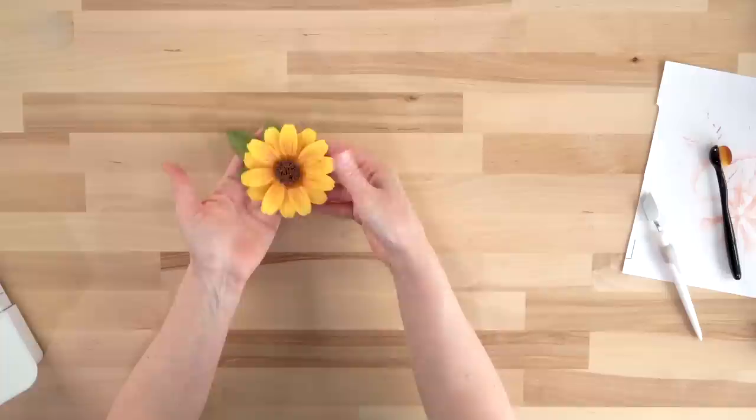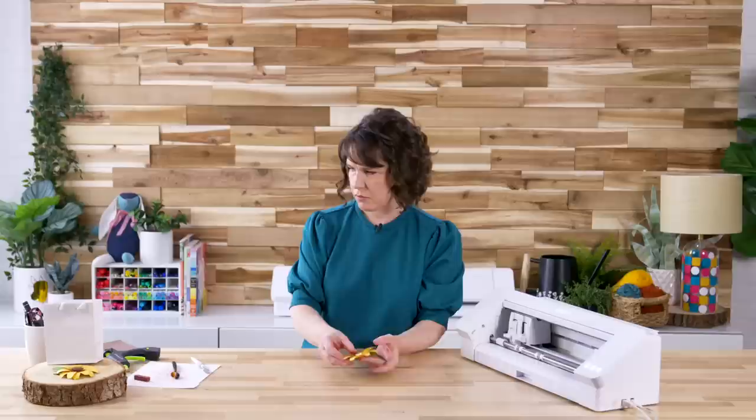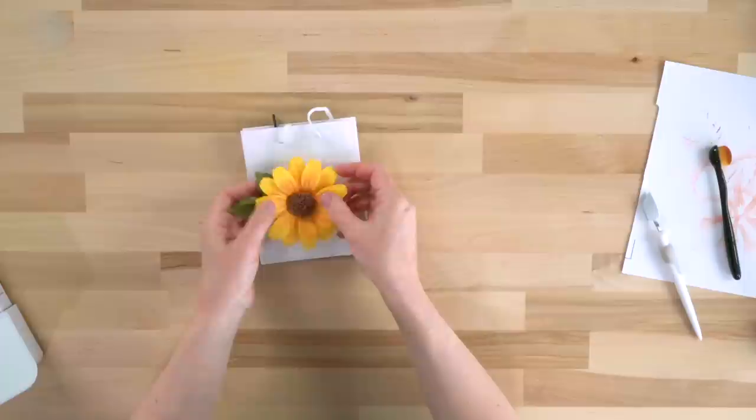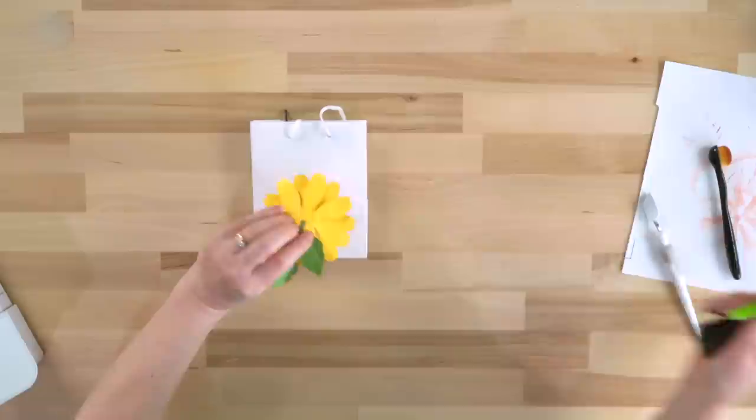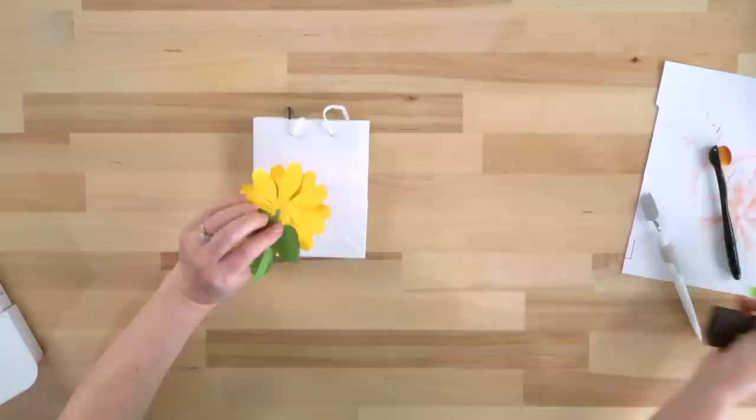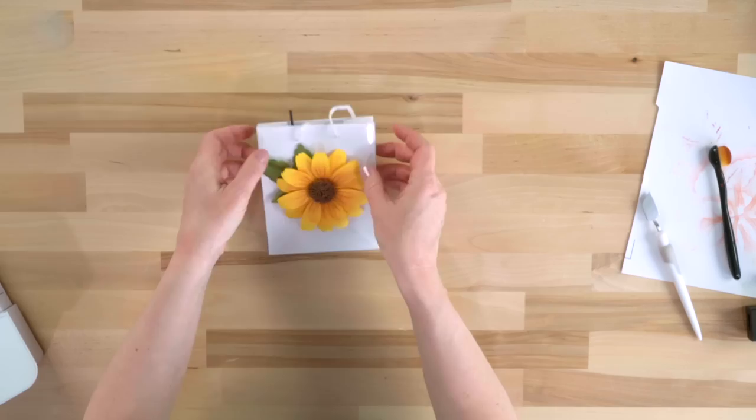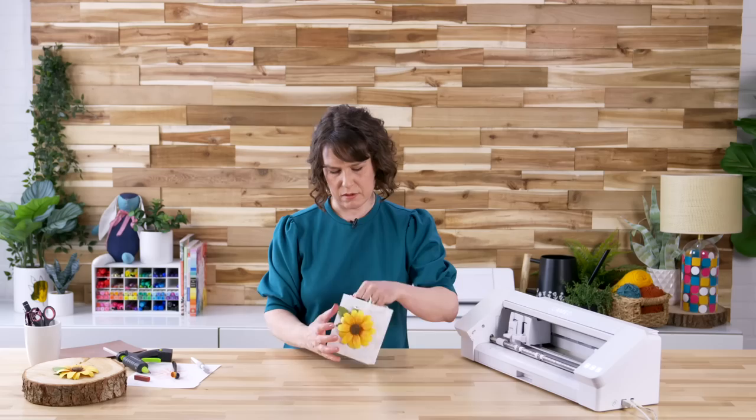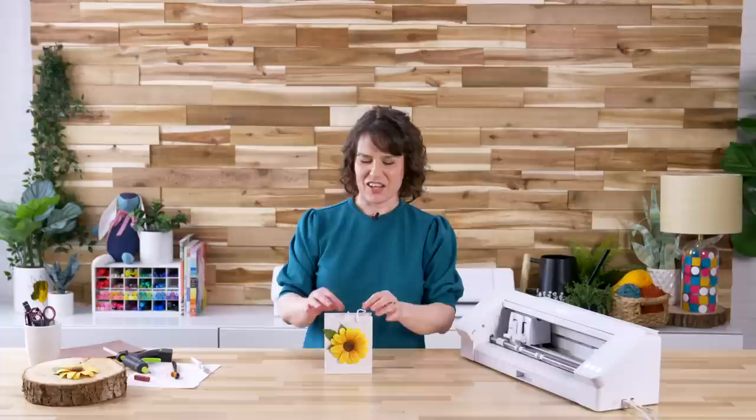So now at this point, you can use your sunflower as an embellishment on a box or a bag. So I have a little bag that I can just attach my sunflower. Or you could make a whole bunch of these sunflowers and maybe glue it to a wreath form and make yourself a sunflower wreath. But I think it's really cute on something like a box or a bag to present as a gift.